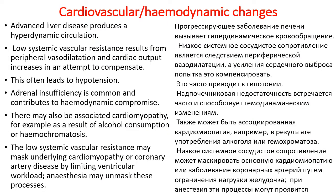Cardiovascular hemodynamic changes. Advanced liver disease produces a hyperdynamic circulation. Low systemic vascular resistance results from peripheral vasodilation; cardiac output increases in an attempt to compensate. This often leads to hypotension. Adrenal insufficiency is common and contributes to hemodynamic compromise.